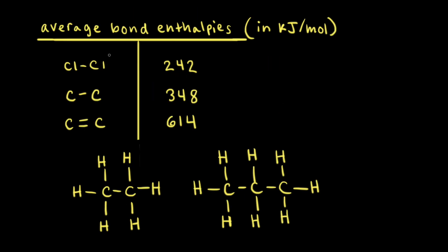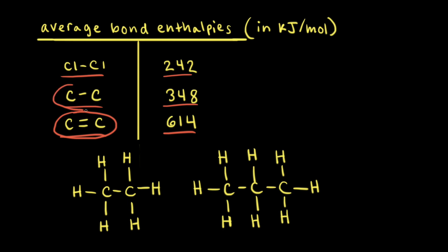Bond enthalpies are often found in the appendices of chemistry textbooks. For example, the chlorine-chlorine single bond has a bond enthalpy of 242 kilojoules per mole, whereas breaking a carbon-carbon single bond takes 348 kilojoules of energy per mole. A carbon-carbon double bond has a bond enthalpy of 614 kilojoules per mole. Since a carbon-carbon double bond is stronger than a single bond, it takes more energy to break it, which is why it has a higher bond enthalpy.